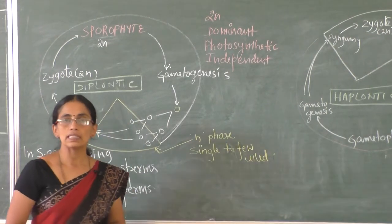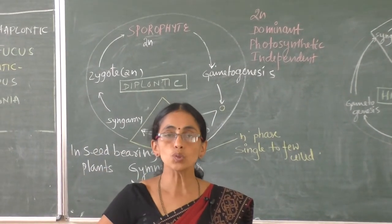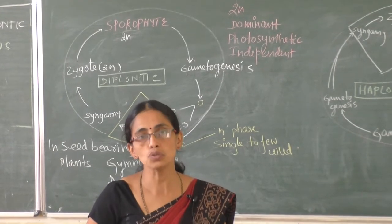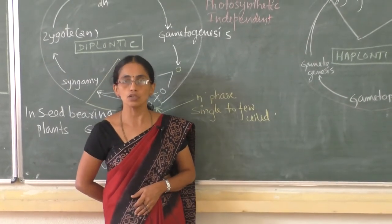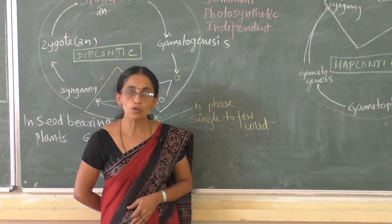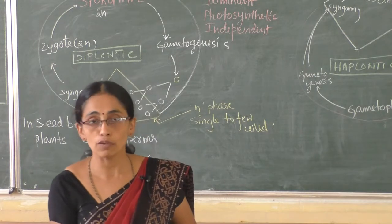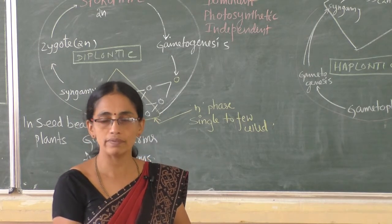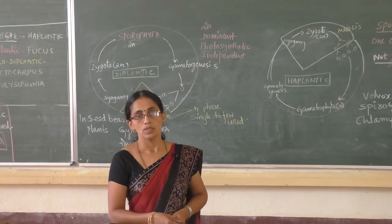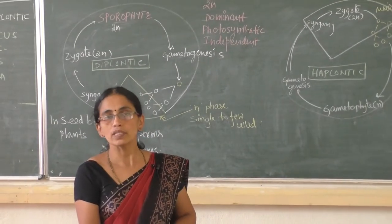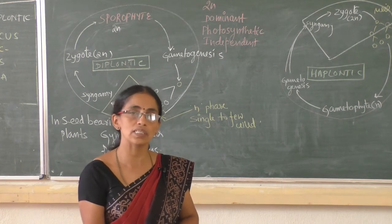Good morning students. In the last class we discussed about alternation of generation in different groups of plants. Members in their life cycle show a sporophyte phase and a gametophyte phase. In the case of bryophytes, the dominant phase is gametophyte, whereas in the case of pteridophytes, the dominant phase is sporophyte. Plants show alternation of generation in the life cycle.